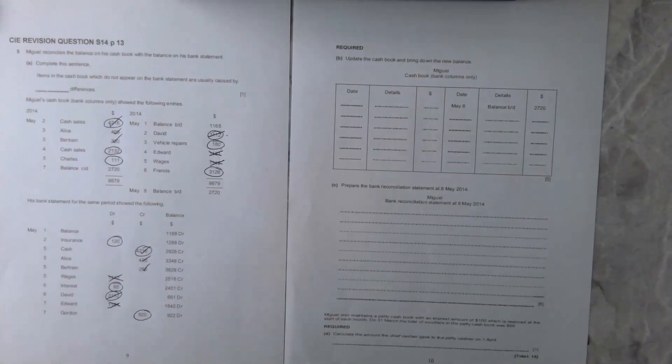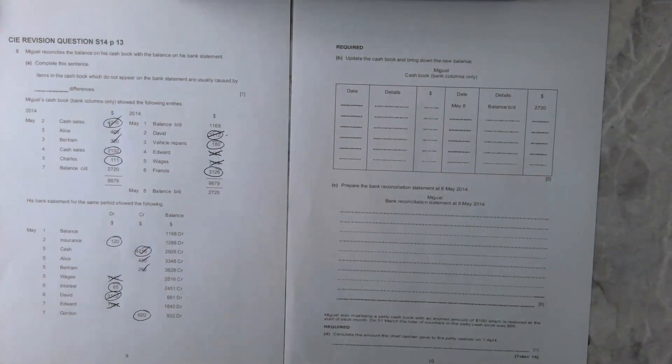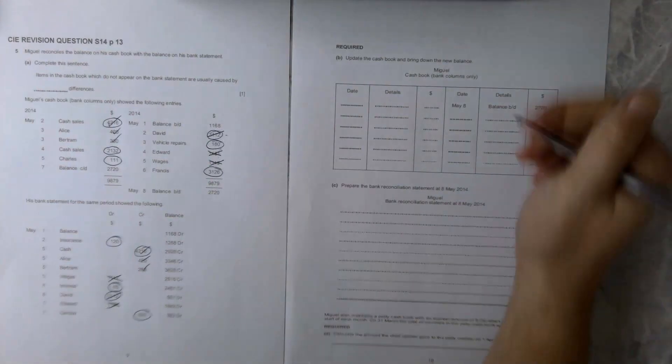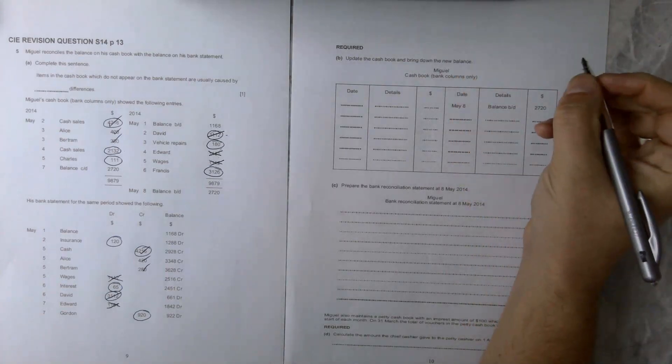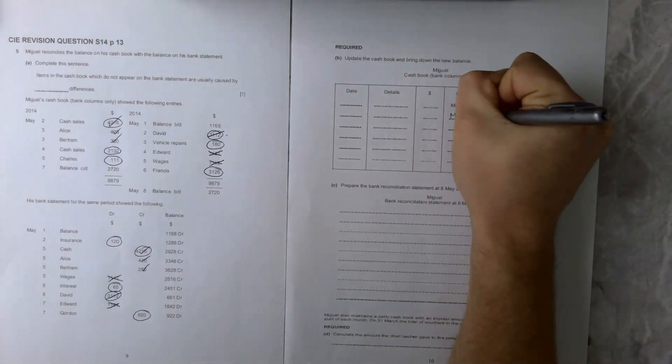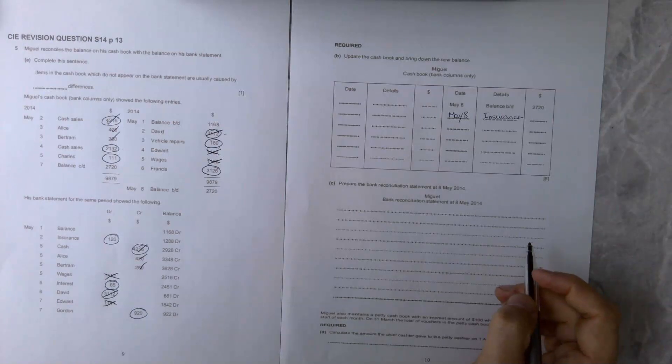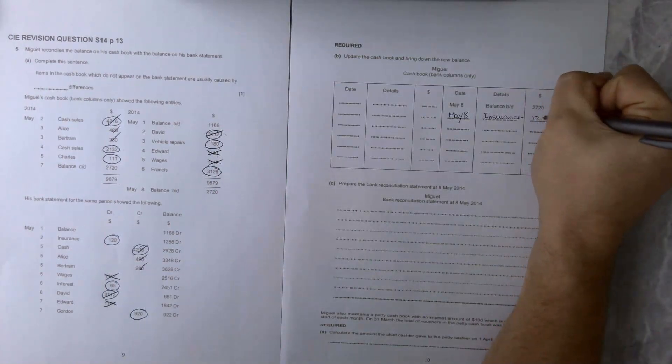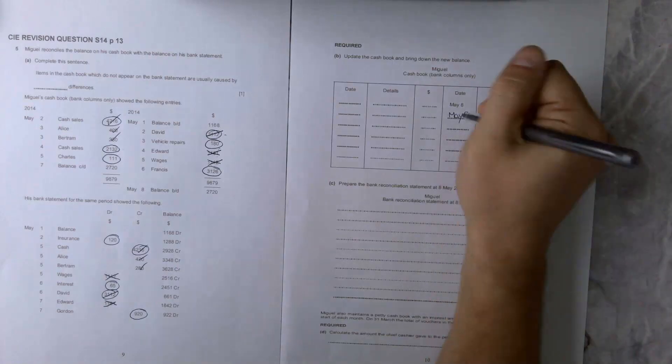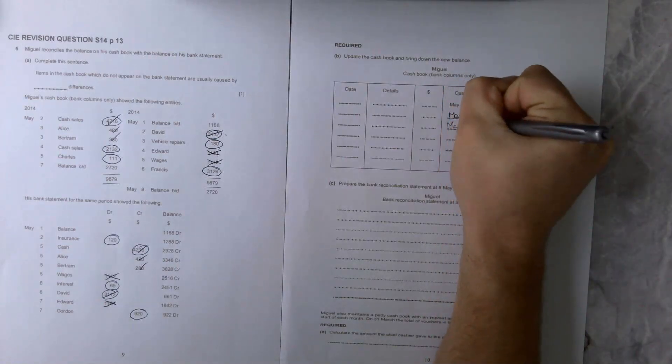Anything that is on the debit side of the bank statement we are going to put onto the credit side of our cash book, because we need to pay that money or recognize that money has left us. May 8th, insurance is going to be chucked in there at $120. Also interest is missing, so May 8th again, interest, and that is $65.